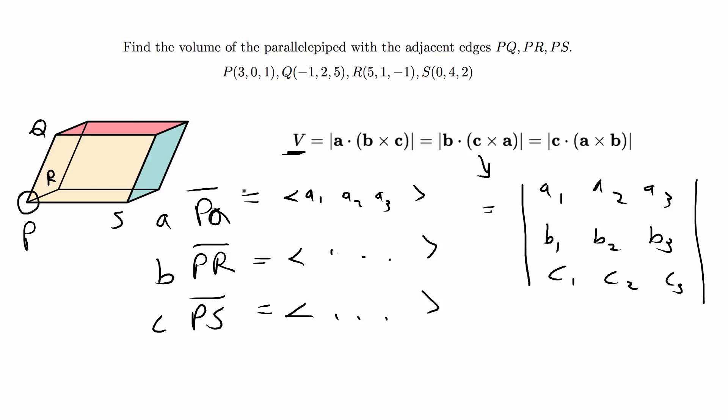Those are the steps and so let's go ahead and solve it for this particular problem. We're given the coordinates so I'm going to do the second letter minus P for all of them. For PQ it's going to be -1 minus 3, that's going to be -4. 2 minus 0 is going to be 2. 5 minus 1 is going to be 4.